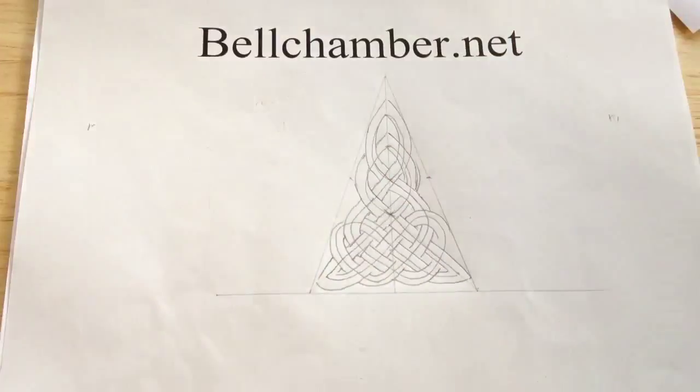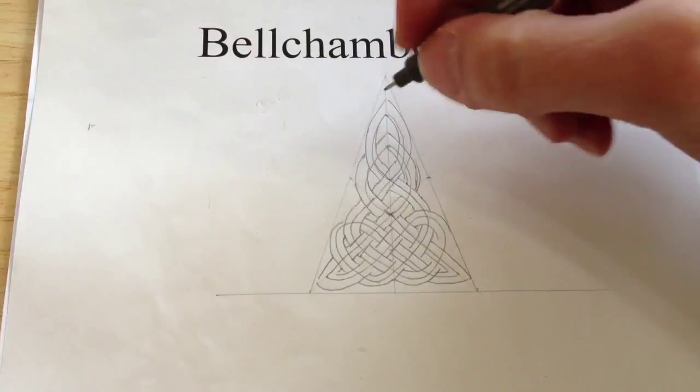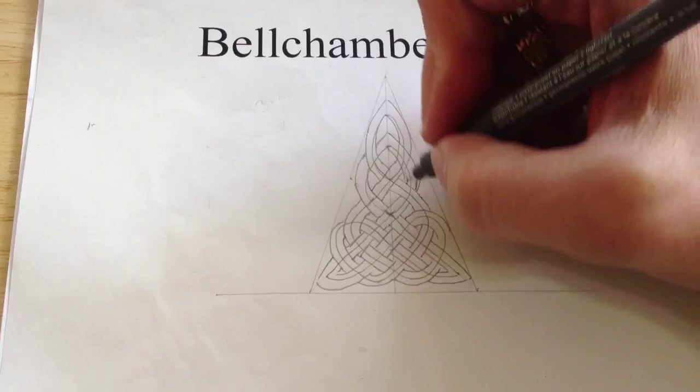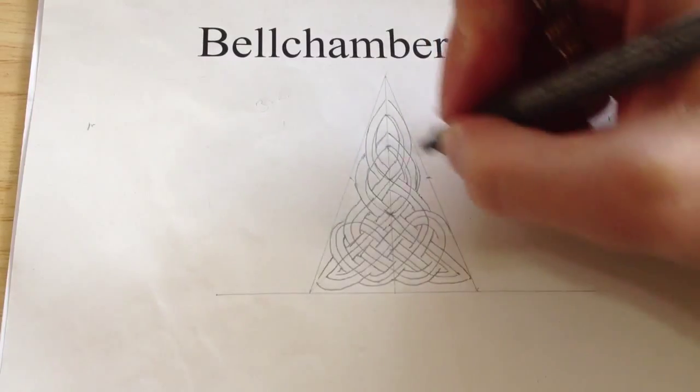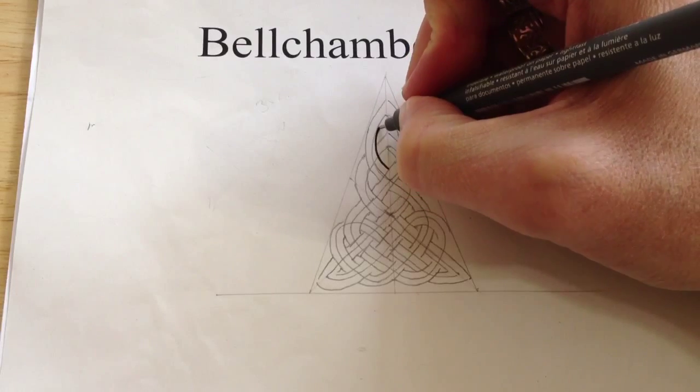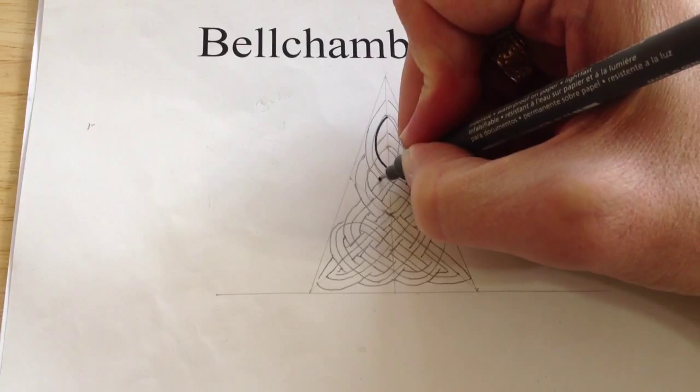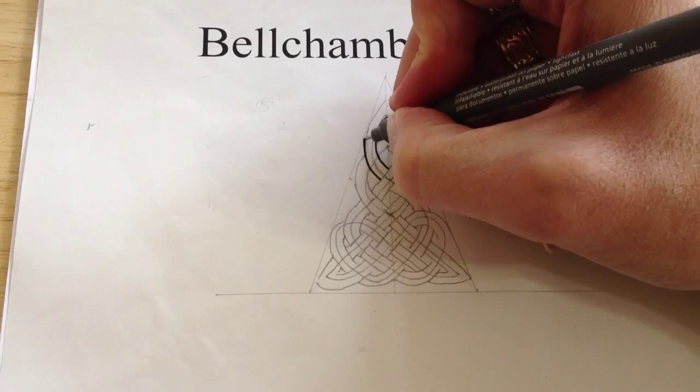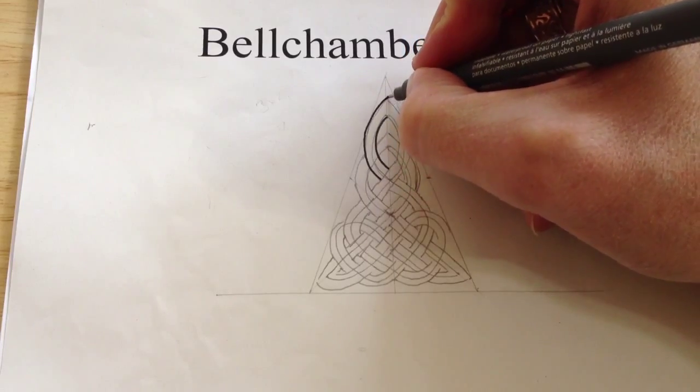Alright, so this is the thinnest of your pigment liners. Start at the top, and try to keep your ribbon as even as possible.